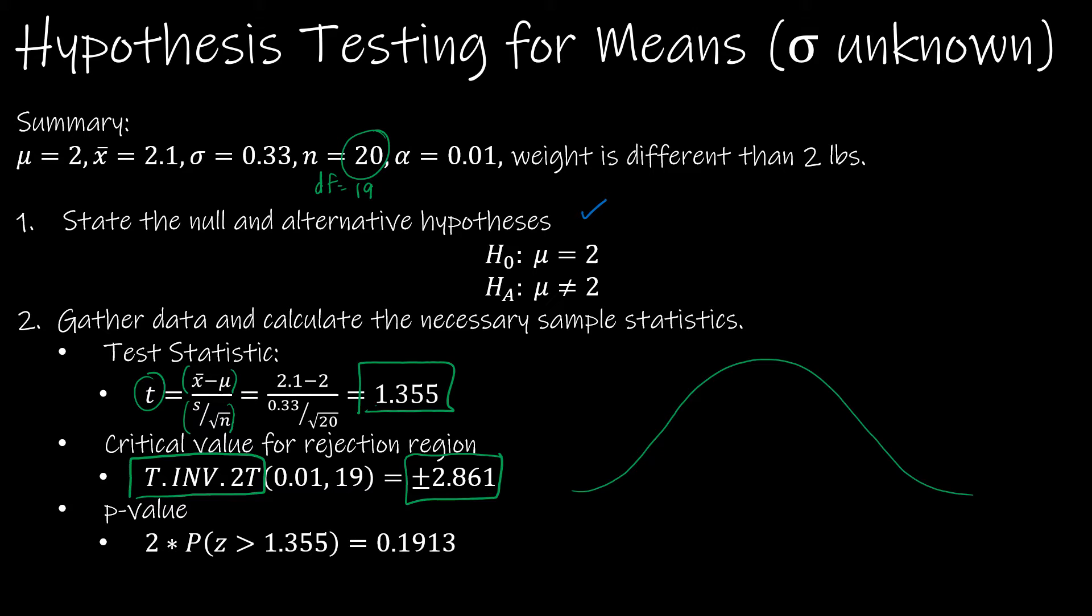So that means way down here is negative 2.861. And then up here is positive 2.861.